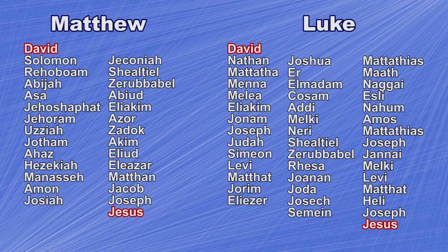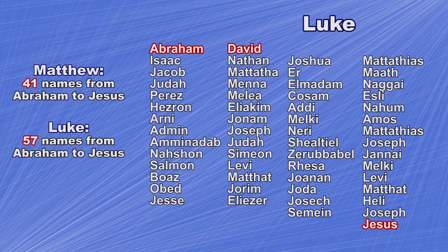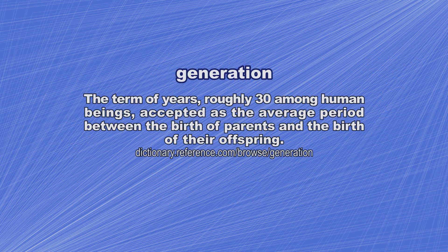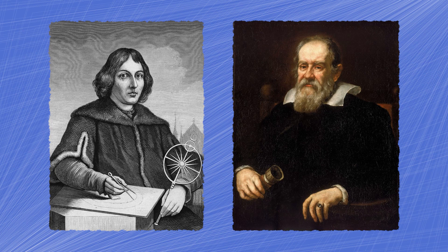One of the first things you might notice when comparing these two genealogies is that Luke's is longer. Counting from Abraham down to Jesus, Luke contains 16 more names than Matthew. If a generation is 25 to 30 years, and I removed 16 of my ancestors, I may have been born instead in the 16th century, during the lifetime of either Copernicus or Galileo. So a difference of 16 generations is quite a discrepancy.